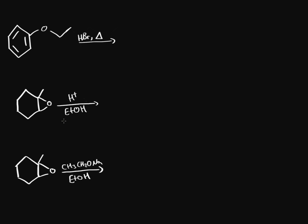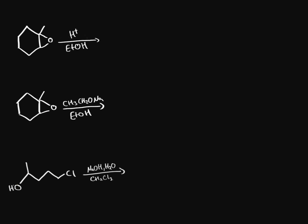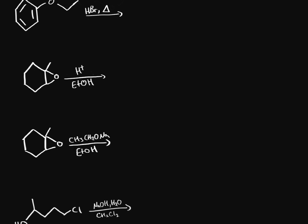What we're going to practice today are some of the reactions that we have with ethers and epoxides. The first one involves hydrobromic acid with heat and this type of ether. In the second reaction, we have an epoxide with an acid and ethanol. In the third reaction, we have another epoxide but with a strong base — an ethoxide ion in ethanol. In the fourth reaction, we have an alcohol group and a halogen reacted with a strong base. In the last one, we have a substrate reacted with MCPBA and a Grignard reagent. Those are the five different reactions we're going to work with today.